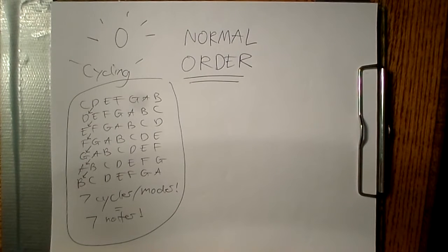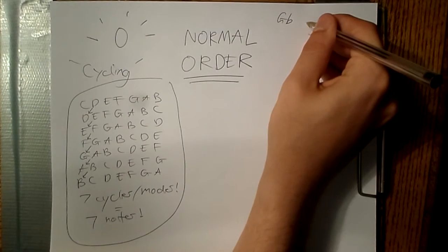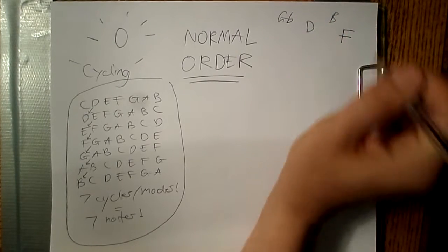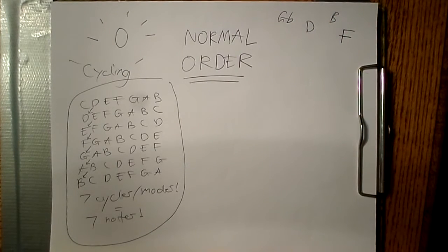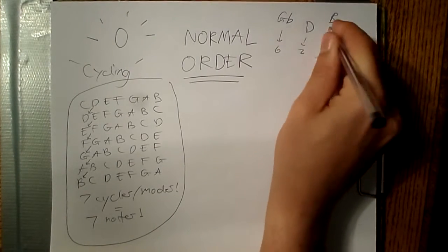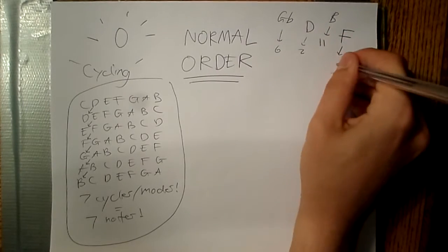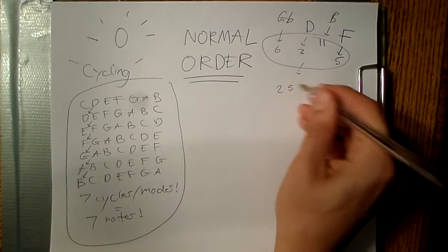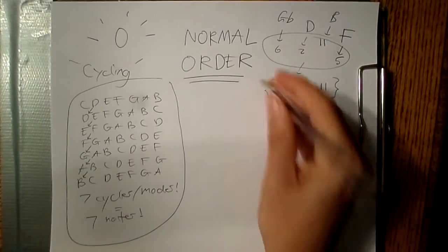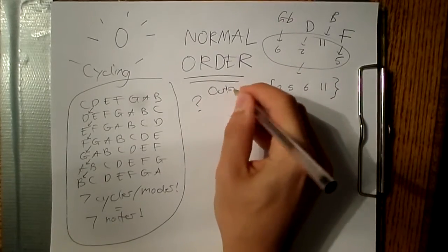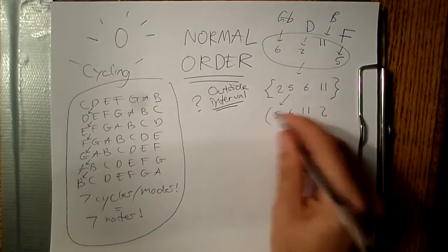Let's try an example. Say I have the notes G-flat, D, B, and F. As letters, that could be written as 2, 5, 6, and 11. And let's put those in those cute little brackets on the ends. Now, let's see what all the possibilities are.